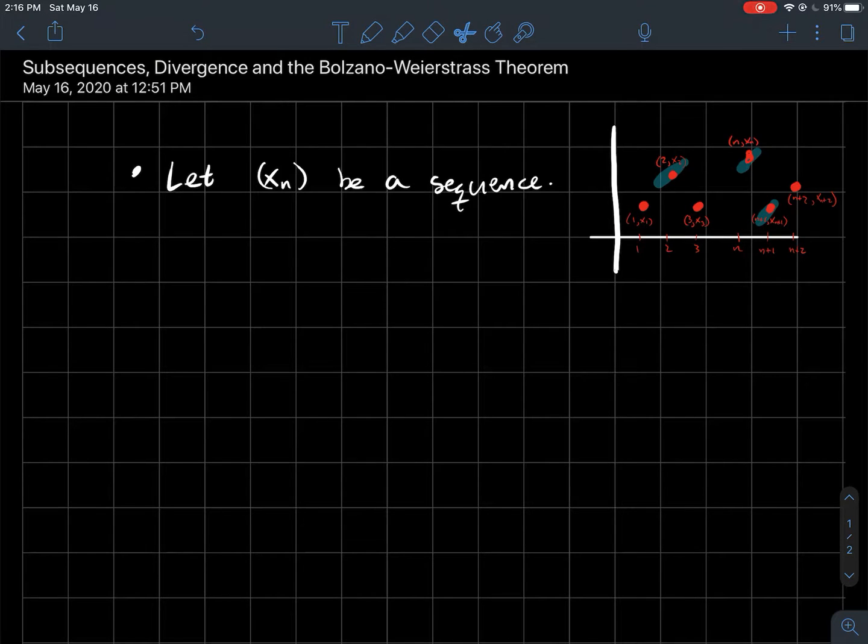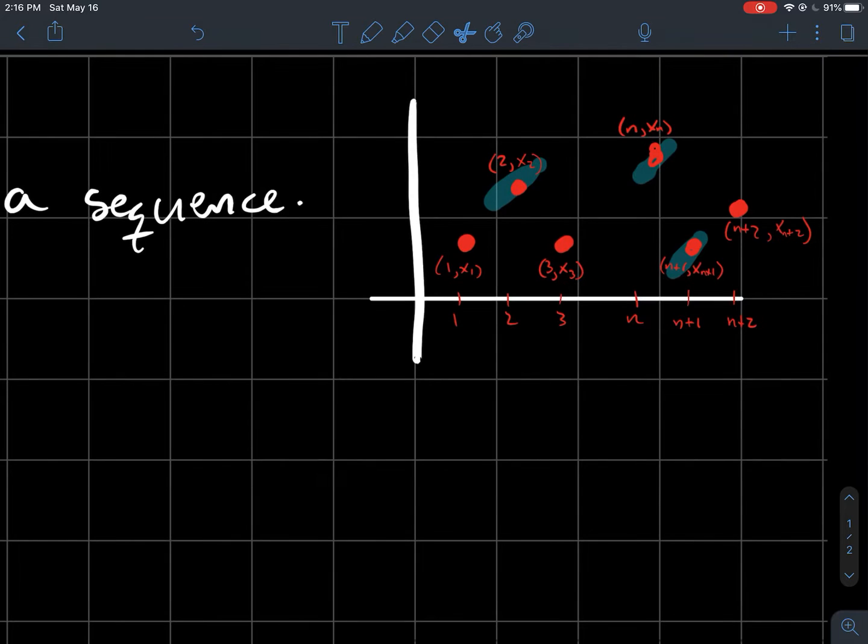This is a short video about subsequences and divergence. So let's say you've got a sequence xn, which I've drawn for you a picture in red. The idea of a subsequence is, what if I don't necessarily use all the points in my sequence? What if I just pick some? And so what if I make another infinite list just out of the points I already have? So I've tried to highlight some of those in blue.